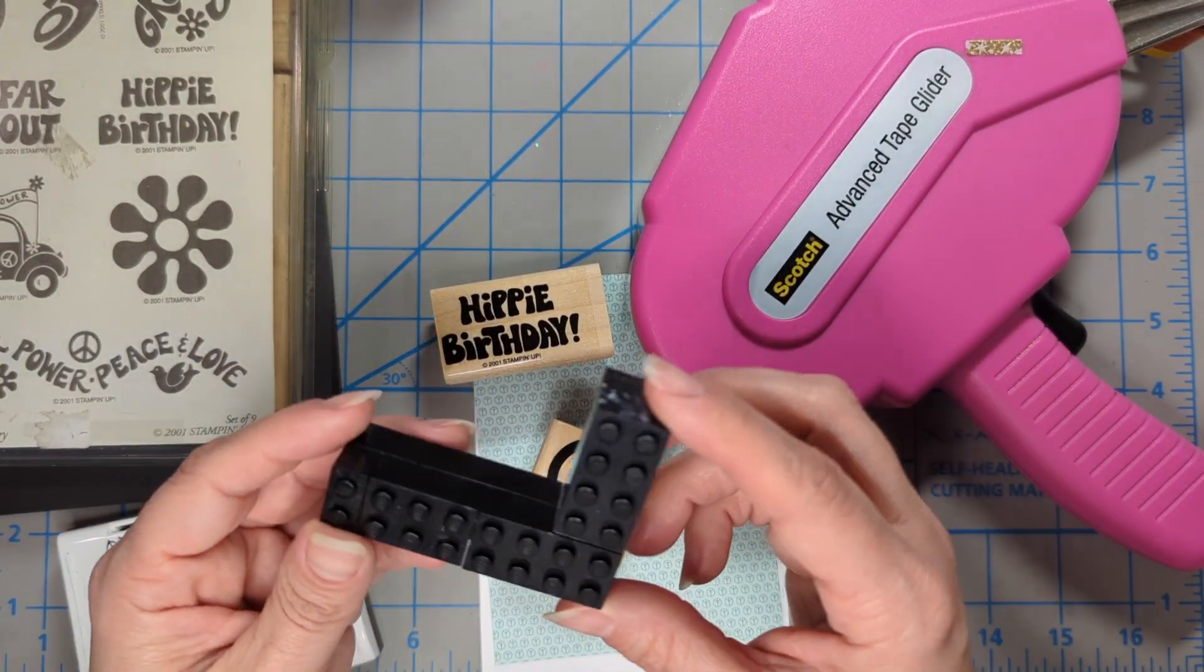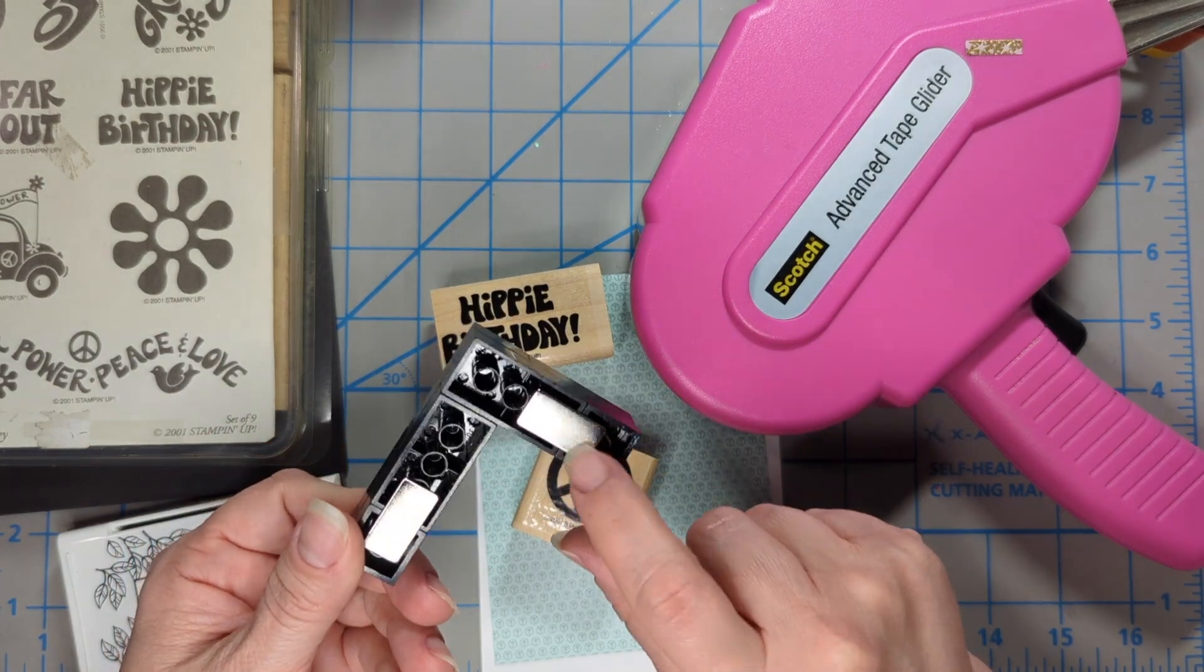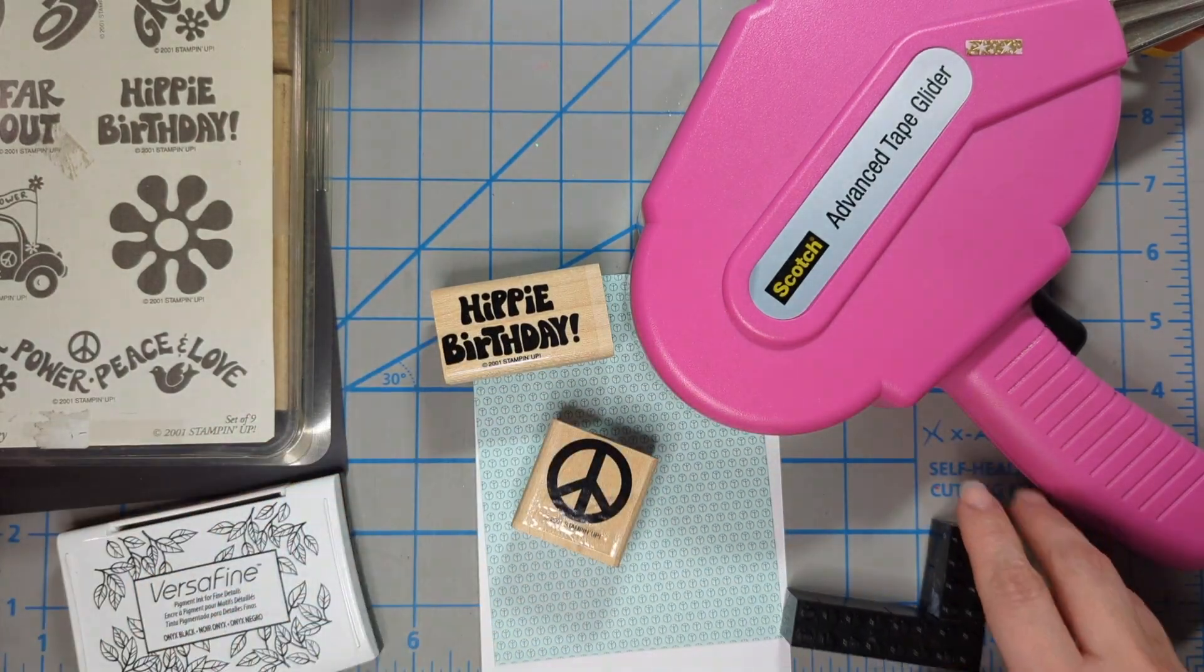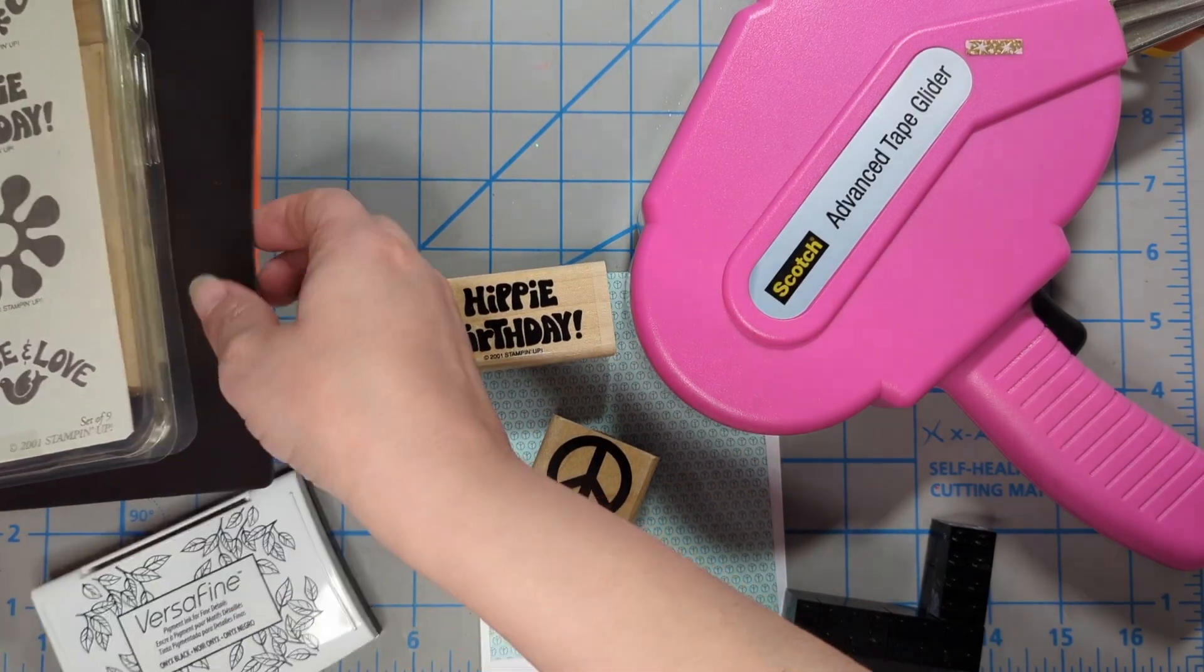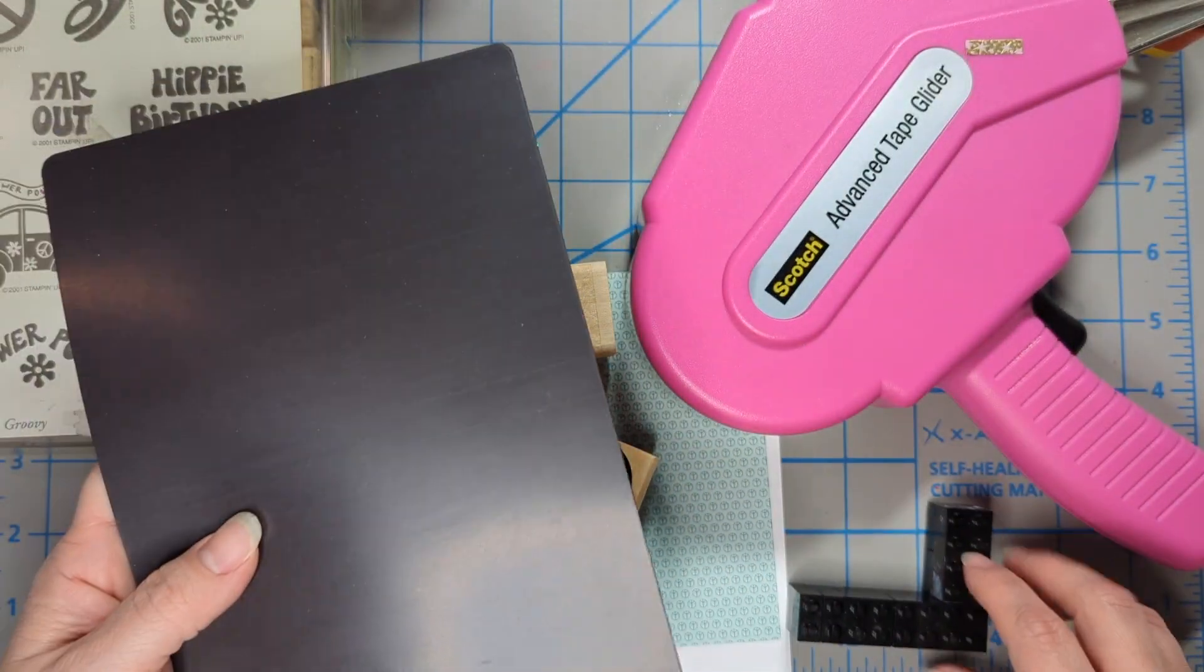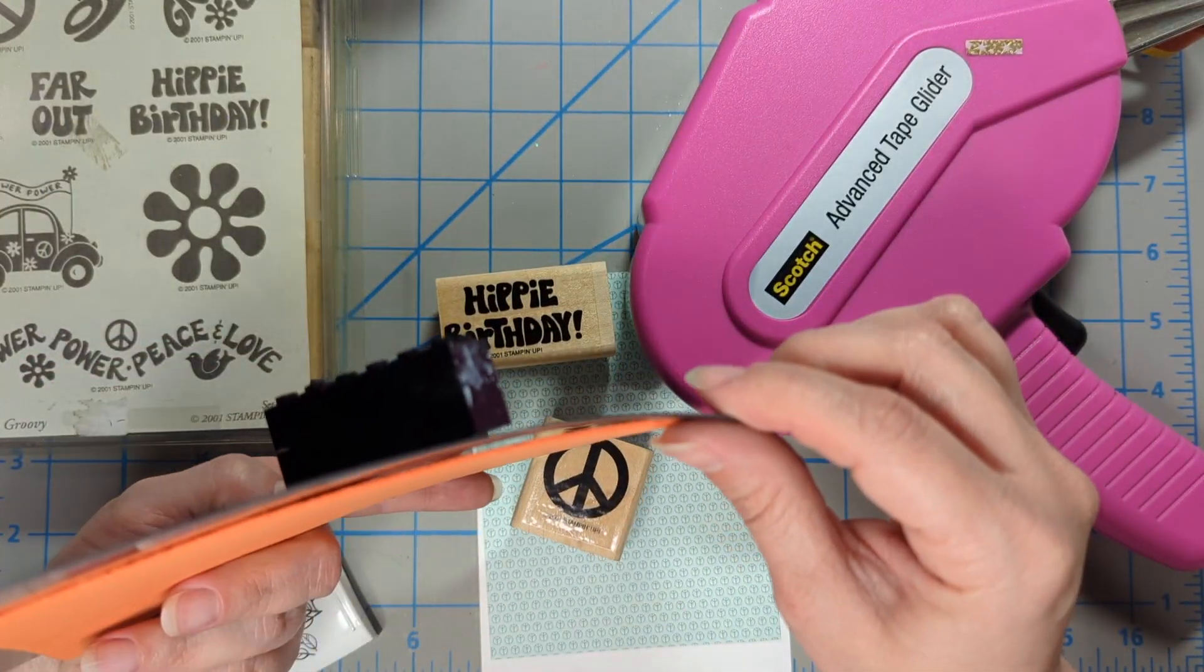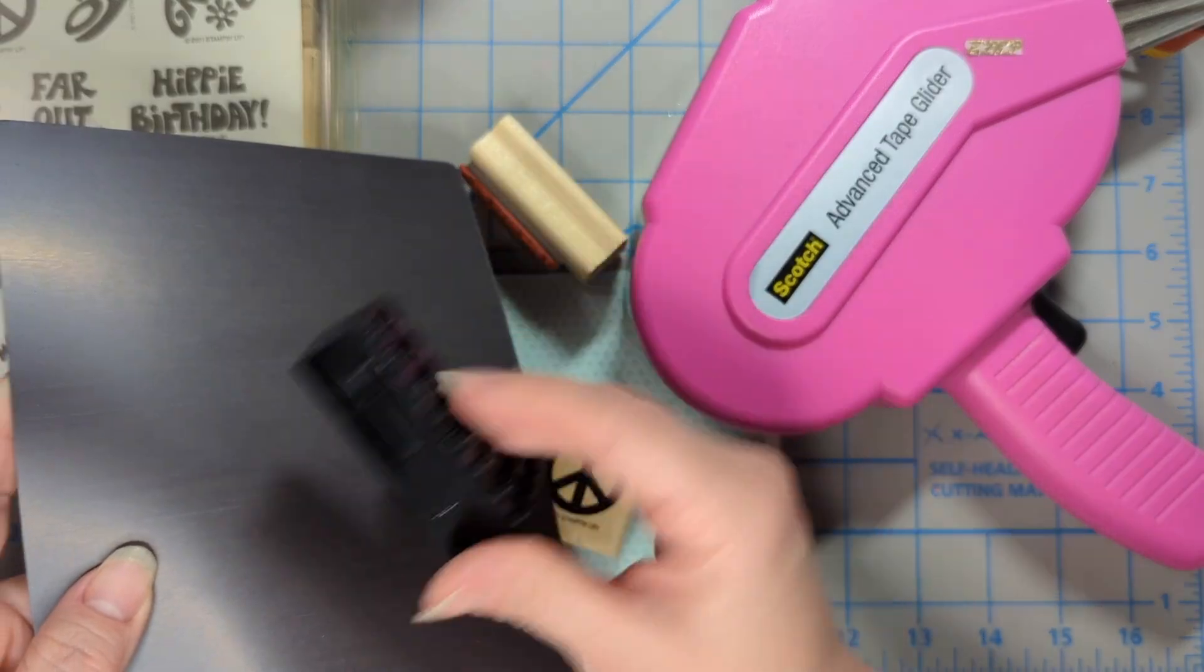I have this stamp positioner that I just made with Legos and some neodymium magnets on the back and it really works well to help position my rubber stamps. It's just kind of a homemade thing that I put together, but I can stick it on a magnetic sheet and that works great.